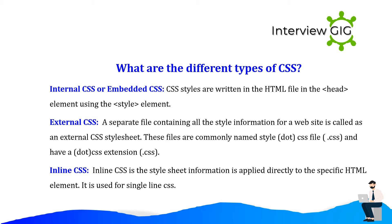What are the different types of CSS? Internal CSS or embedded CSS: CSS styles are written in the HTML file using the style element. External CSS: a separate file containing all the style information for a website, commonly named style.css with a .css extension. Inline CSS: style sheet information applied directly to a specific HTML element; used for single line CSS.